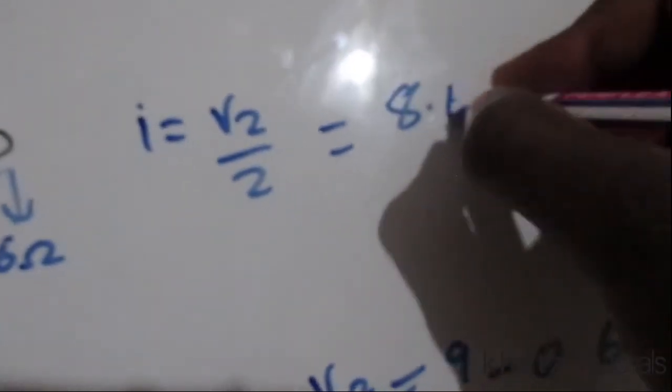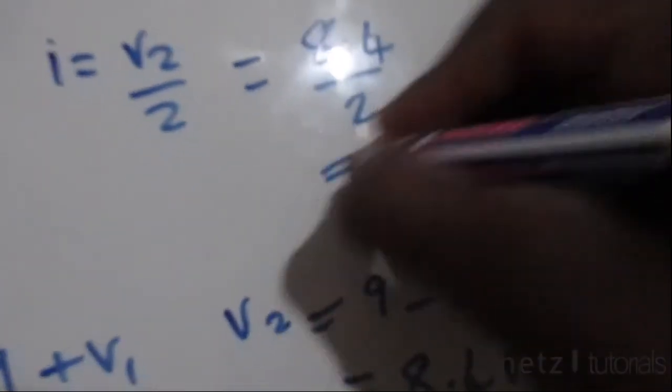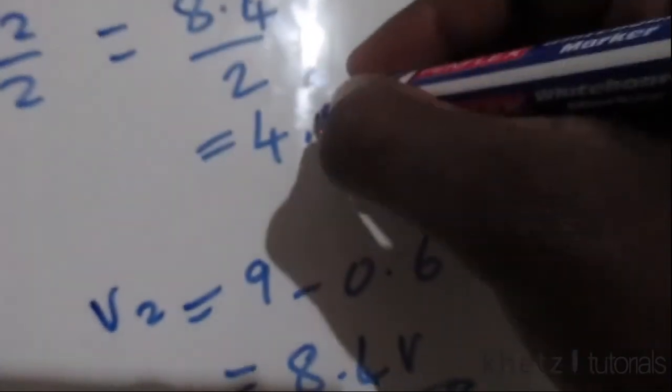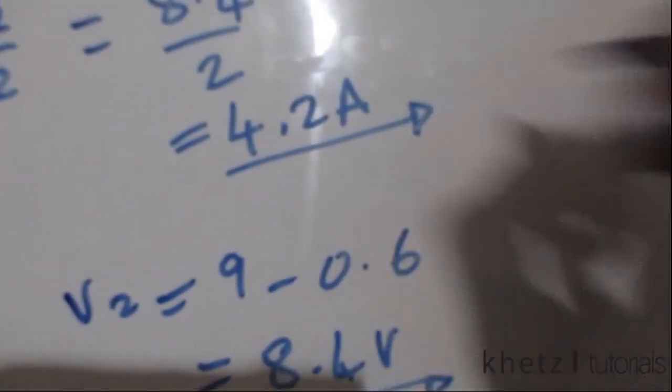I equals 8.4 divided by 2, which is basically equals to 4.2 amperes. And that is how you solve this problem.